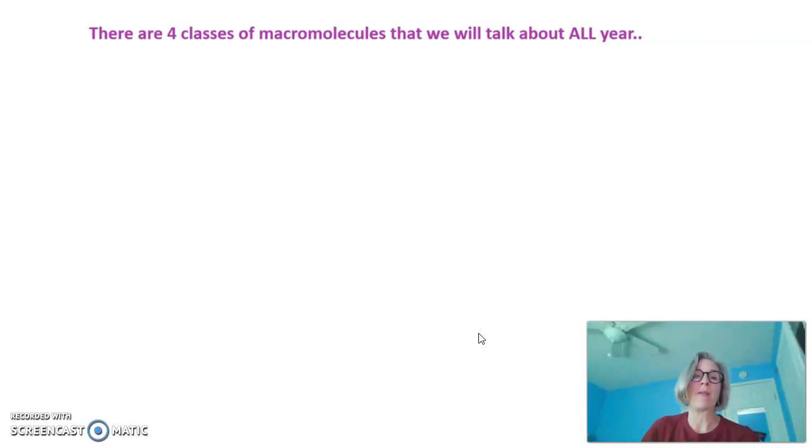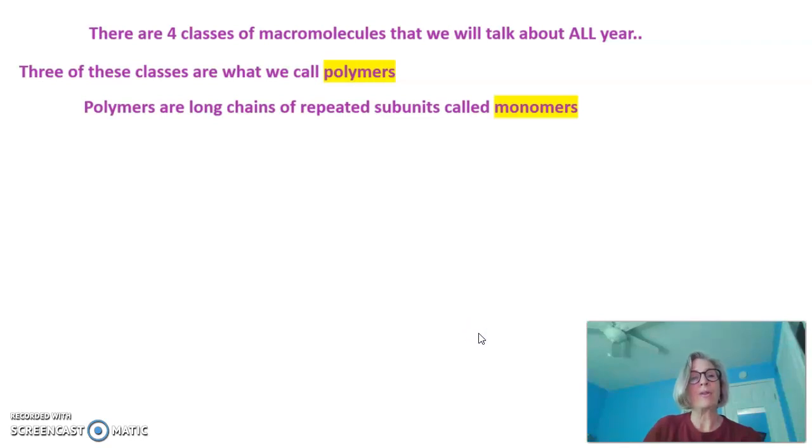There are four classes of macromolecules that we will talk about all year. Three of these classes are what we call polymers. Polymers are long chains of repeated subunits called monomers.